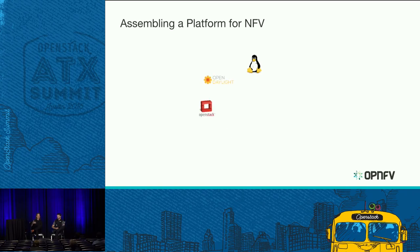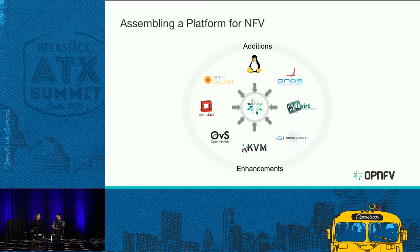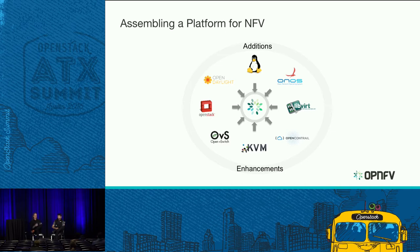We keep coming back to the same question: what do you run on? Maybe you run on an assembly of OpenStack, OpenDaylight, KVM, OVS. But somebody else says they want to use FD.io as a forwarder, or they have a private DPDK-enhanced version of OVS. Somebody needs to pull that together. That leads to: is there one OPNFV or two OPNFVs — how do we deal with the diversity? You also have additions and enhancements where enhancing a component changes its behavior, so what you had is no longer what you have.